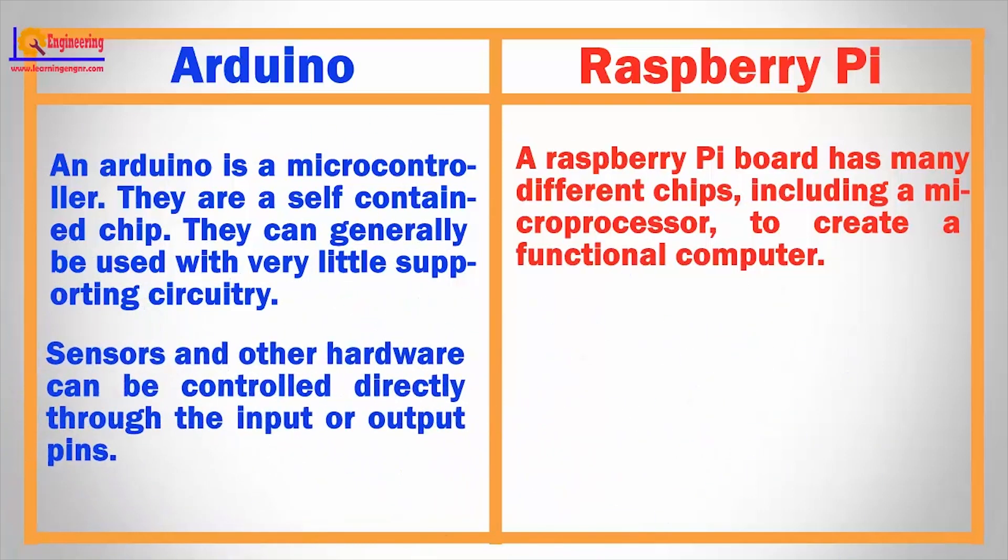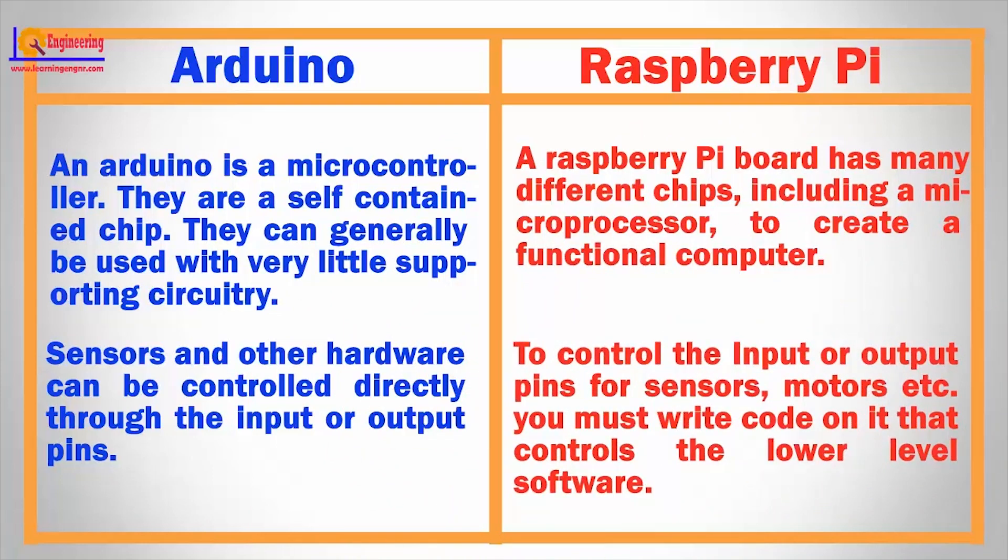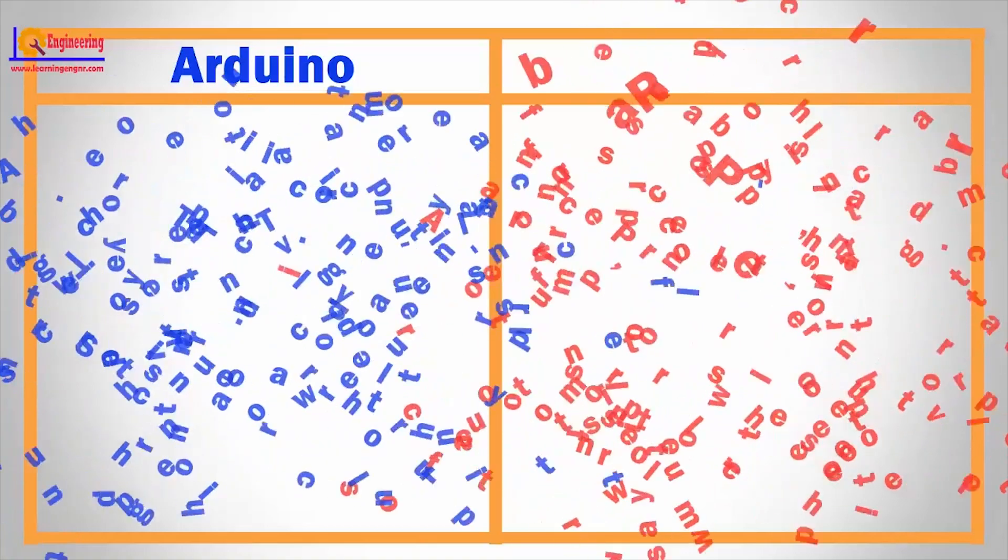Sensors and other hardware can be controlled directly through input or output pins. To control the input or output pins for sensors, motors, etc., you must write code that controls the lower-level software.